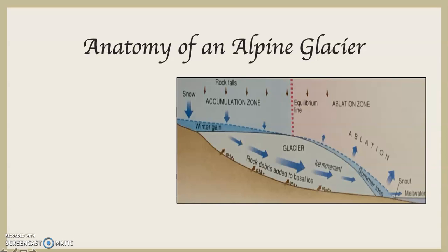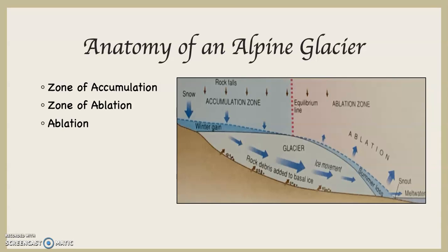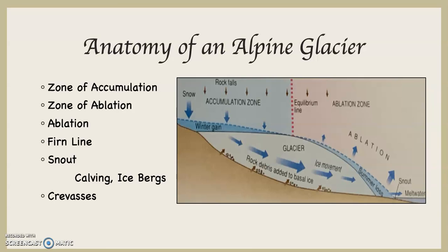Here are the things I would like you to see, know, and be aware of. Although I'm going to use slightly different terminology than what you see on this diagram, the terminology overlaps, and anybody who studies glaciers — if you use the terminology I'm going to give you or the terminology on that diagram — this stuff will cross over without any problem. I want you to know what the zone of accumulation is, the zone of ablation, what the word ablation means, what the firn line is, where the snout is, what calving and icebergs are, and what crevasses are.